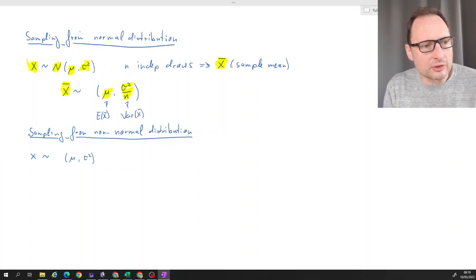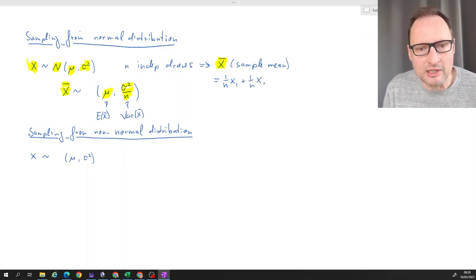However, if we are drawing from a normal distribution, x̄ is of course just a linear combination of normally distributed random variables. Remember that's the same as 1/n·x₁ + 1/n·x₂ all the way to 1/n·xₙ.